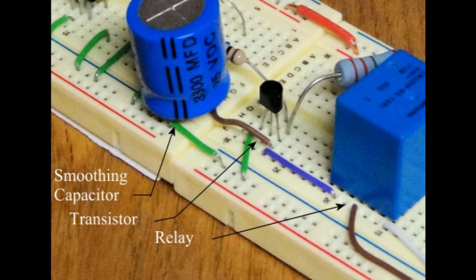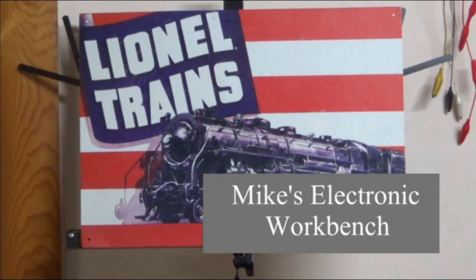This relay isolates the circuit from the accessories and allows more power to be delivered than could otherwise be delivered by the 555 chip and the transistor by itself. The relay switches the 18 volt accessory voltage of the 1033 transformer to the automatic gateman.